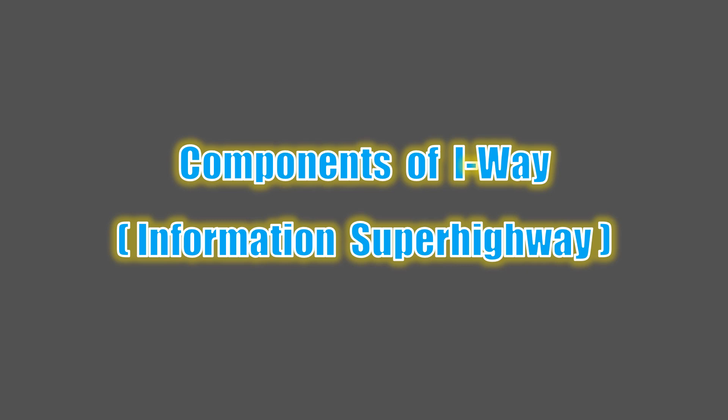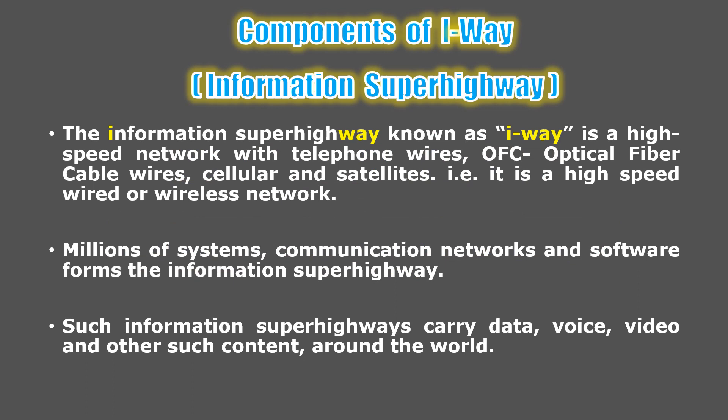Let us understand the components of the Information Superhighway, also known as the IH or highway. It consists of high-speed networks using telephone wires, optical fiber cables, cellular and satellite networks — that is, it is a high-speed wired or wireless network. The information superhighway consists of a network created using both wired and wireless networks, where each network consists of millions of systems.